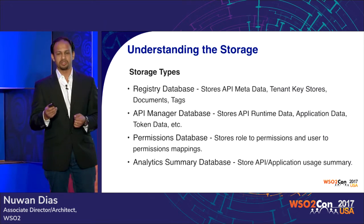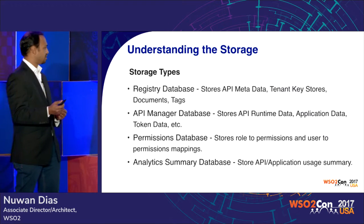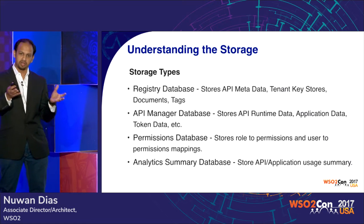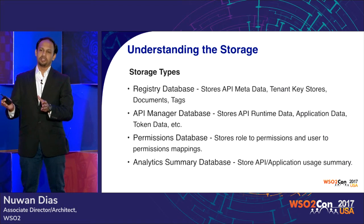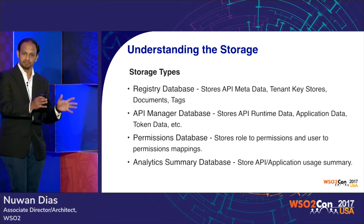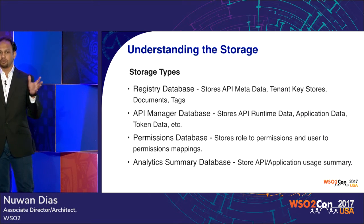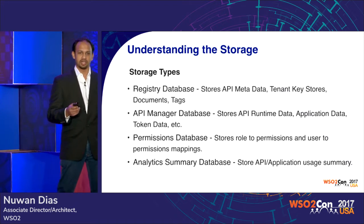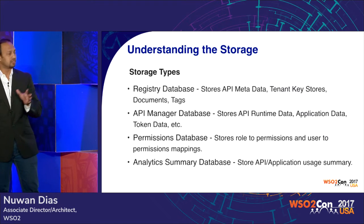Let's understand the different types of data storages used within the product. There are four main types: the registry, the API Manager database, the permissions database, and the analytics summary database. The registry holds API meta information, while the API Manager database holds API runtime information — the data required by the gateway and key manager to serve end-user traffic. Meta information, which is not required by the gateway and key manager to serve traffic, is stored in the registry.